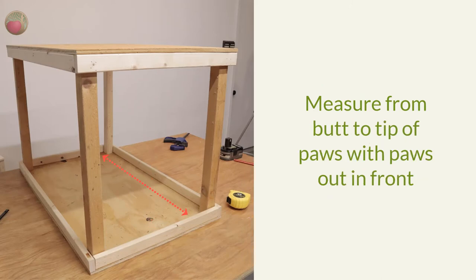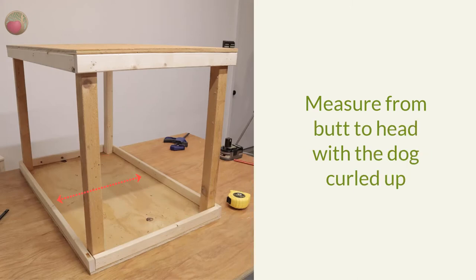And then measure butt to front paws with the dog laying down with the paws in front of them. Now that should be the front to back of the kennel interior, plus two to three inches. And then measure butt to head with the dog curled up. And this should be your side to side kennel interior, plus two to three inches for turnaround room.